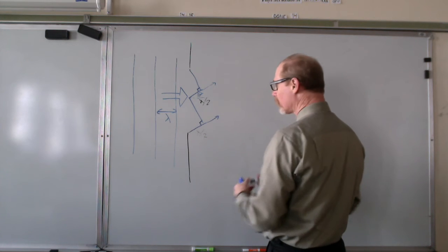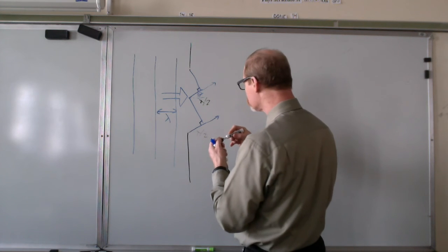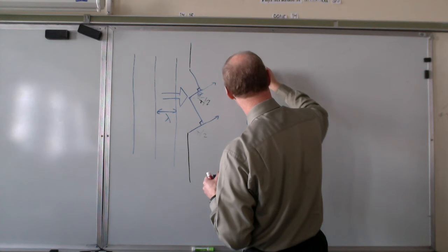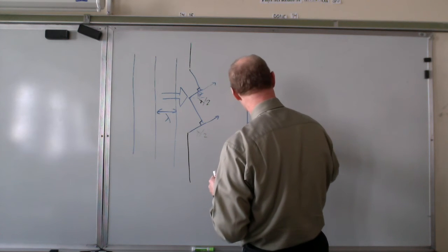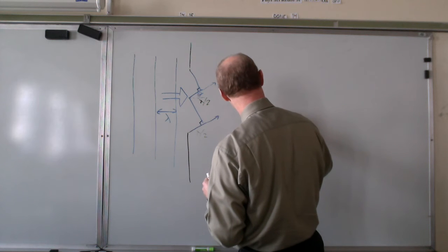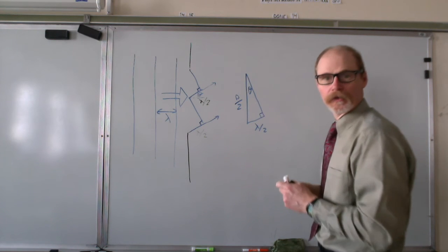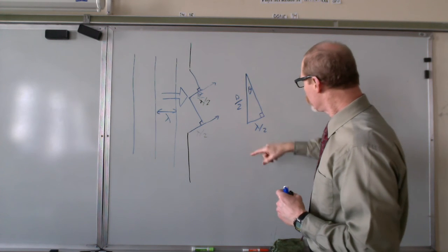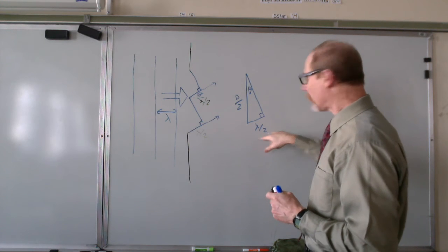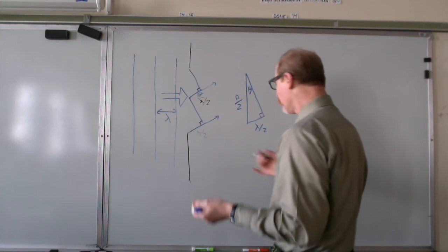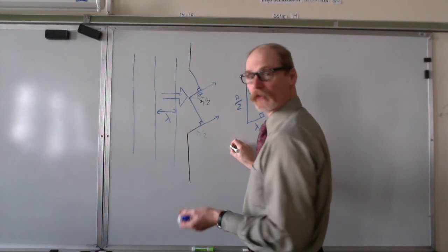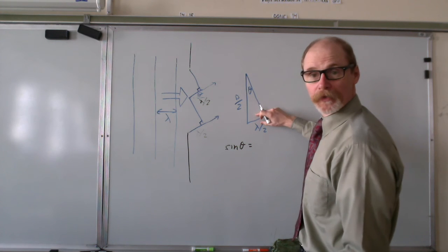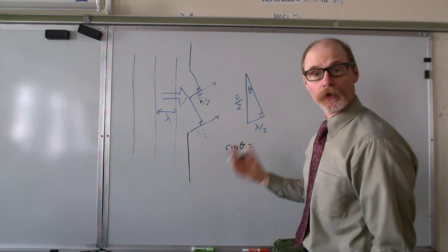So what is this angle going to be? Very simply, we have a right triangle such as this. We've got this angle is theta, the hypotenuse of the angle is d over 2, and the side opposite angle theta has a dimension lambda over 2. So the condition for this angle is that the sine of the angle is going to be this opposite side divided by the hypotenuse, or lambda over 2 divided by d over 2.